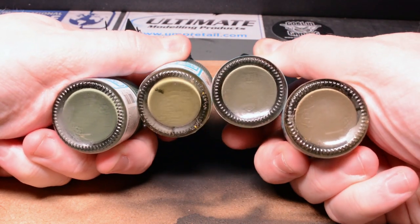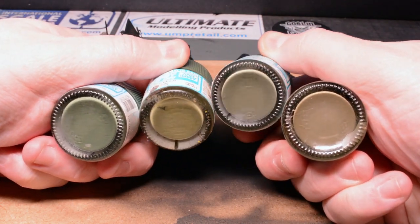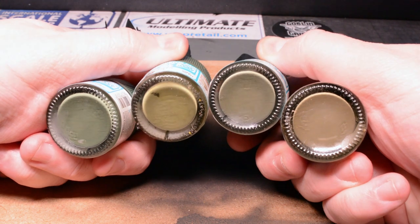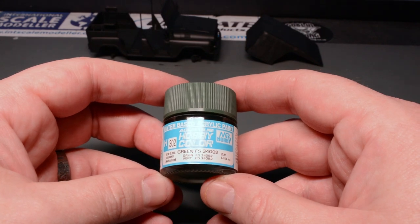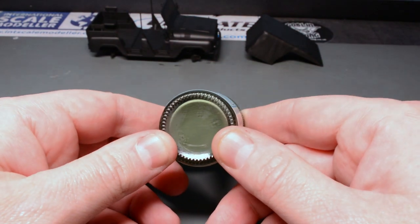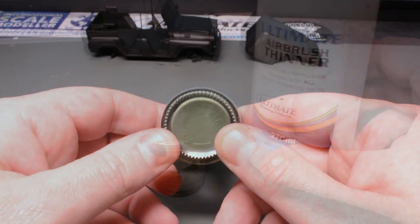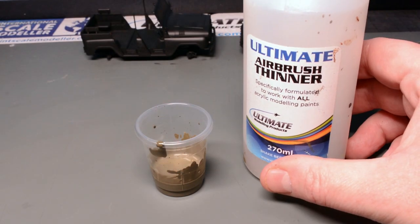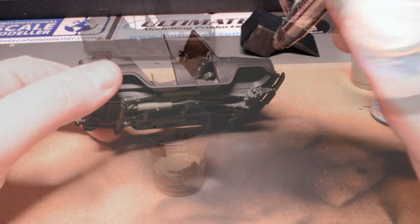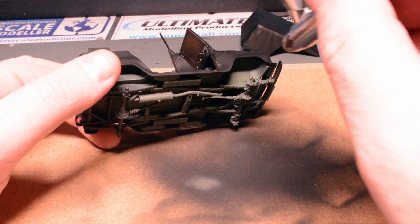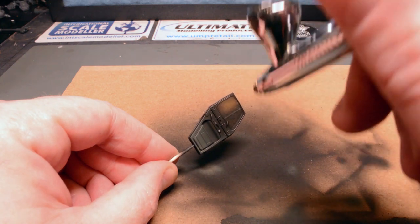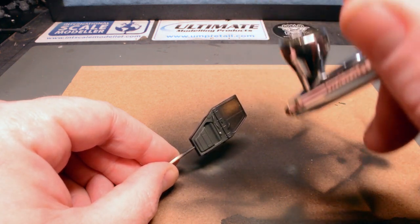With the primer complete it was time to choose a base colour and rather than going off the colour call outs in the kit instructions I went by eye from the game screenshots that I had taken and I settled on H302 from the Mr Hobby Aqueous range but more on colour choice later. I thinned this down for the airbrush with ultimate modelling products airbrush thinners and got to work on the underside of the vehicle just to make sure that my spray was settling down nice and smooth before I progressed on to paint the rest of the sub assemblies in the H302 green.